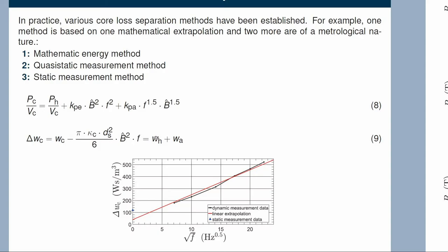This gives you the hysteresis loss energy and the microstructure eddy current loss density. When you plot it over the square root of frequency and extrapolate to zero, it is possible to calculate the hysteresis core loss density. A drawback of this method is that the eddy current part neglects the skin effect in the cross-section area of the core.